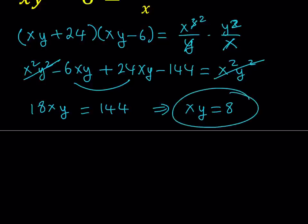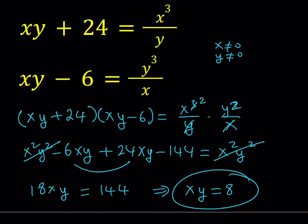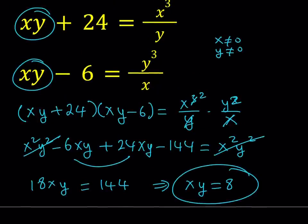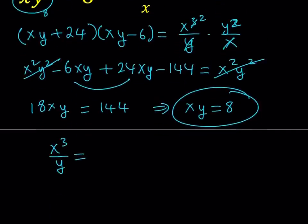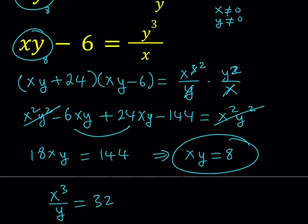Now I got the value of xy, so what I can do is I can actually go ahead and substitute into both of these equations. Let's see what we get from there. If you substitute xy equals 8 into the first equation, you should be getting 8 plus 24 here, and then here you should be getting 8 minus 6. x cubed over y is going to give you 8 plus 24, which is 32. And from the second one, 8 minus 6 is equal to 2, so y cubed over x equals 2.